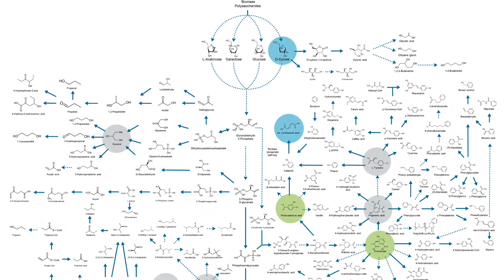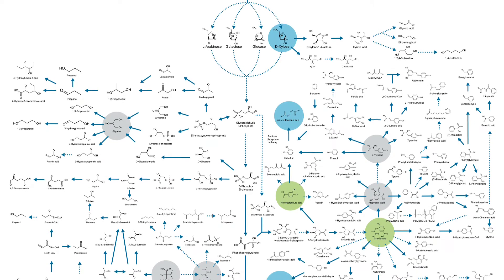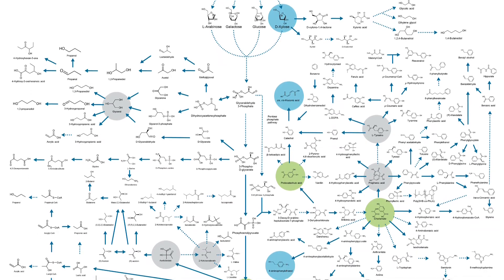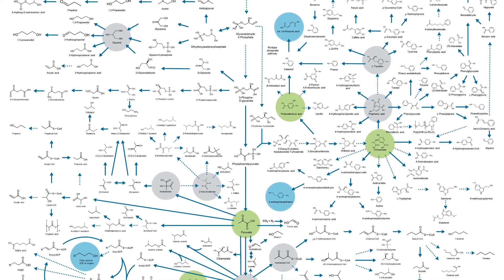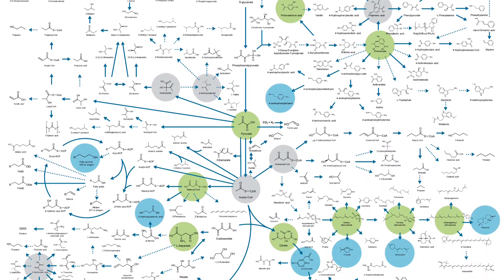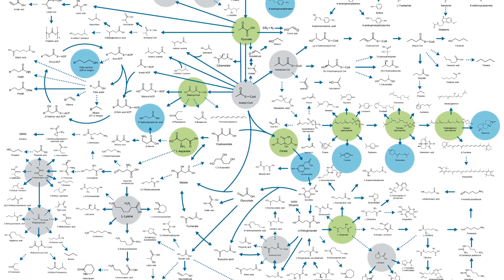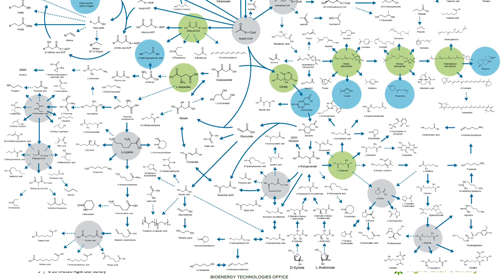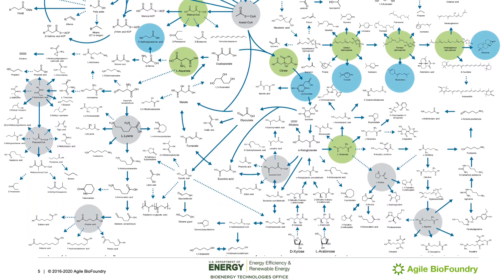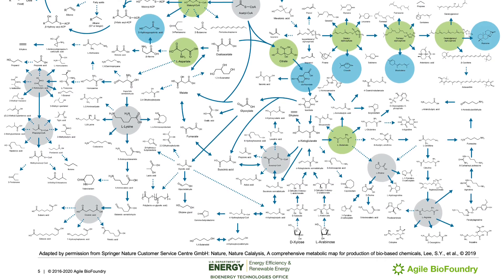To that end, the ABF is developing microbial strains for production of several exemplar products shown in blue circles on this metabolic map that are associated with beachheads shown in green. We're expanding the number of beachheads we're developing over time, and potential beachheads are shown in gray circles.